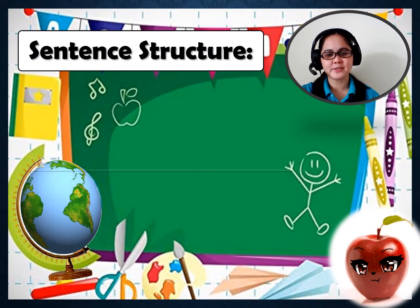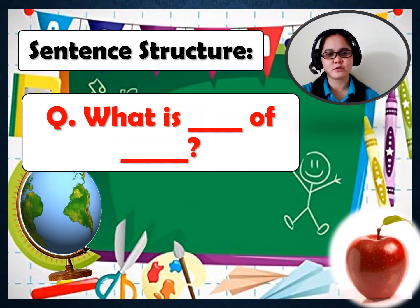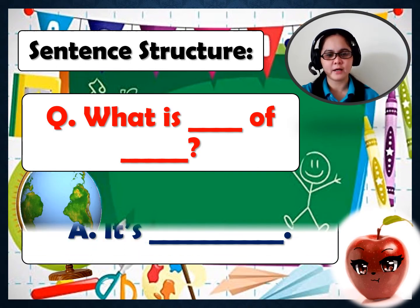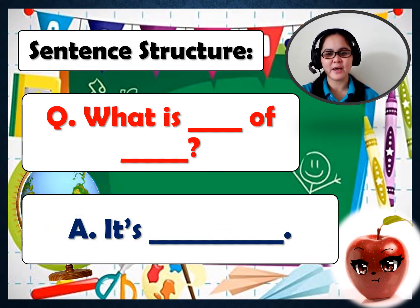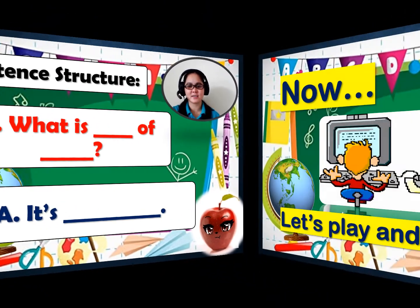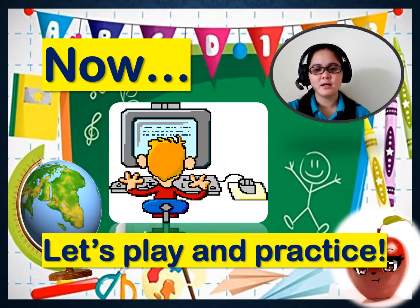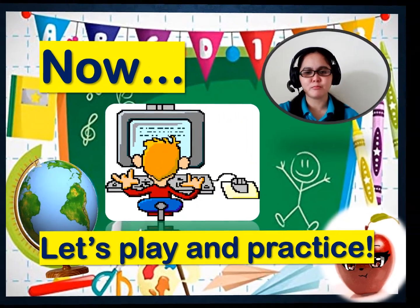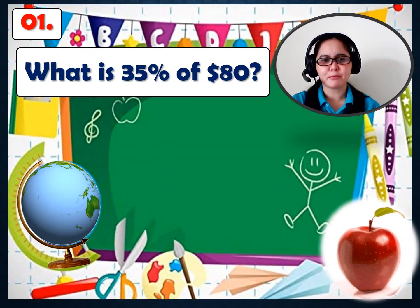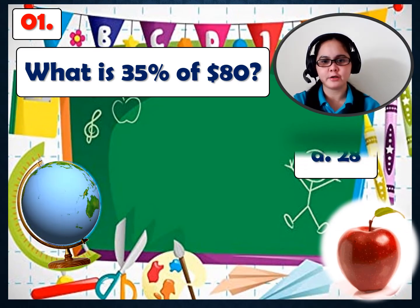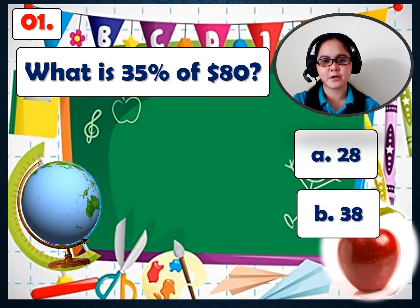For our sentence structure: 'What is blank of blank?' Answer: 'It's blank.' Now let's play! Number 1: What is 35% of $80? A: 28, or B: 38. Let's solve.